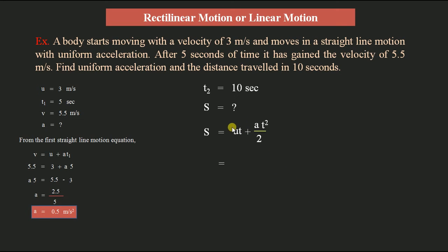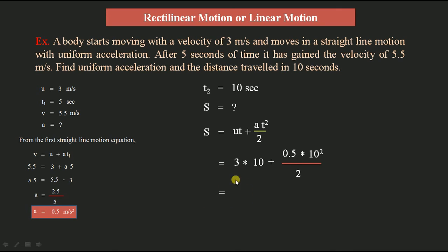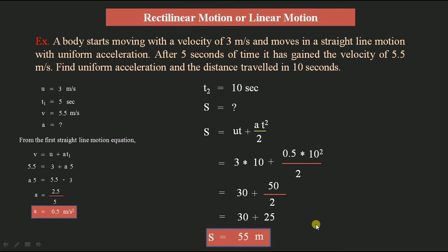Substituting: s = 3 × 10 + (0.5 × 10²) / 2 = 30 + (0.5 × 100) / 2 = 30 + 50/2 = 30 + 25 = 55 meters. So the distance traveled by the body in 10 seconds is 55 meters. Both the acceleration and the distance have now been determined.